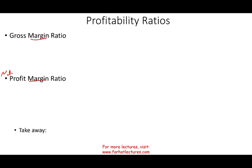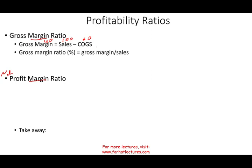The gross margin ratio starts with gross margin, which is sales minus cost of goods sold. For example, if total sales is $100 and cost of goods sold is $60, the gross margin is $40. To compute the gross margin ratio, divide $40 by $100, giving 40%. This shows how well managers control cost of goods sold in relationship to sales — for every dollar in sales, we pay 60 cents in cost of goods sold and keep $0.40 in profit. Ratios make it easier to compare divisions.